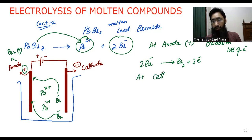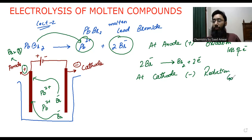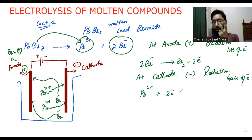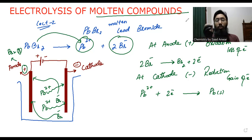At the cathode, the cathode carries negative charge, and what happens at the cathode? Reduction — you can remember this by the mnemonic 'red cat.' Reduction is the gain of electrons. When all the lead ions reach towards the cathode, these lead ions gain two electrons and are converted into lead in solid form. So in electrolysis of molten compounds, it is very predictable: positive ions go to the cathode and negative ions go to the anode, giving us a clear product at each electrode.